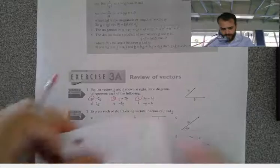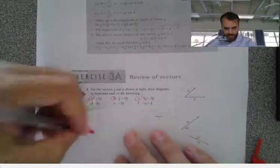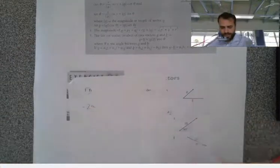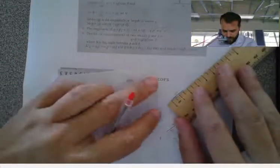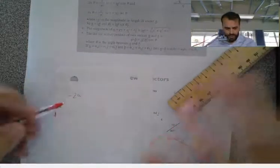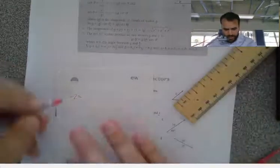So question A, first of all, says find negative 2A. This is the vector A. So if I take my ruler here, vector A is about a centimeter and a half long. Now, negative 2A.